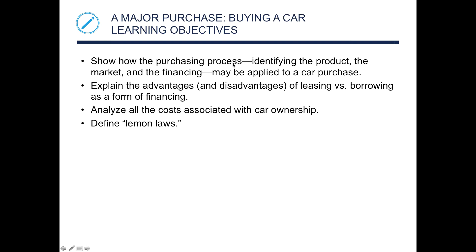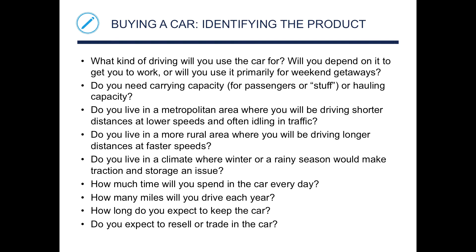Buying a car: show how the purchasing process — identifying the product, the market, and the financing — may be applied to a car purchase. Explain the advantages and disadvantages of leasing versus borrowing as a form of financing. Analyze all costs associated with car ownership and define lemon laws. When identifying the product, ask: what kind of driving will you use the car for? Will you depend on it to get to work or use it occasionally for weekend getaways? Do you need carrying or hauling capacity? Do you live in a metropolitan area with short distances and traffic, or a rural area with longer drives at faster speeds? How much time will you spend in the car each day, how many miles per year, how long do you expect to keep it, and do you expect to resell or trade it in?